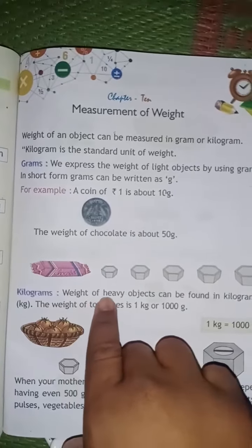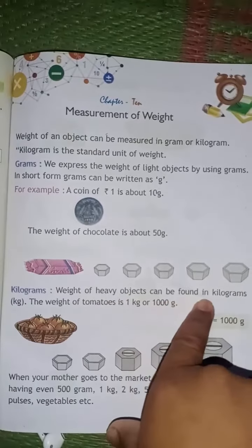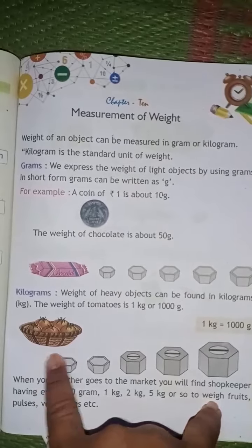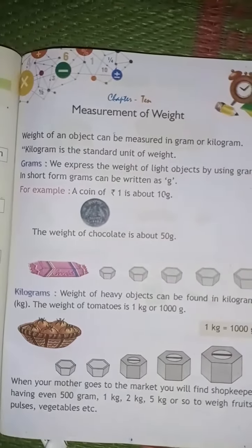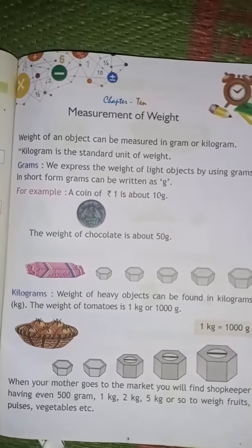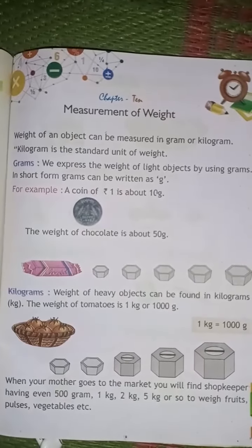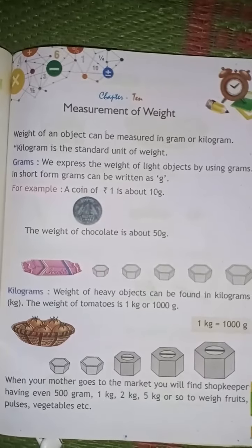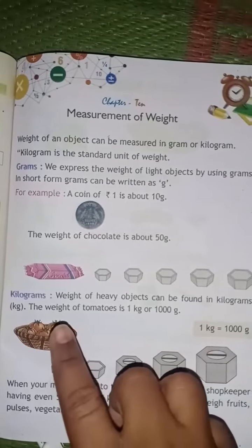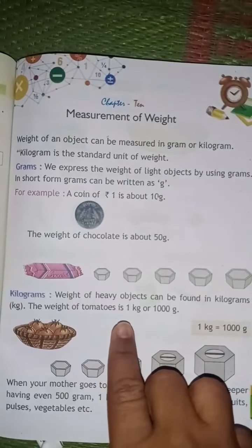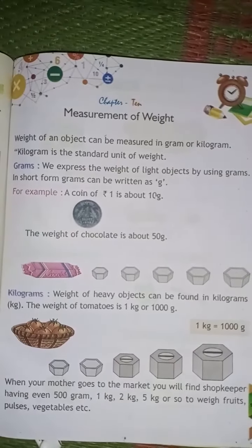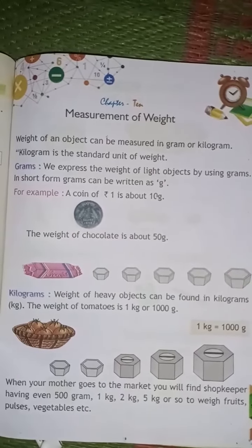The weight of heavy objects can be found in kilograms. The weight of a tomato is 1 kg or 1000 grams. 1 kg is equal to 1000 grams.